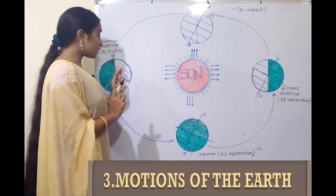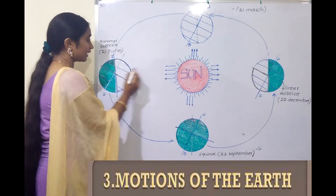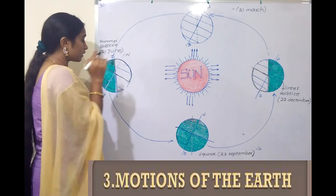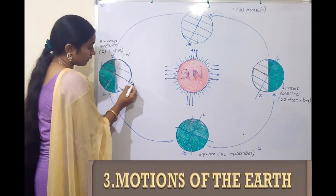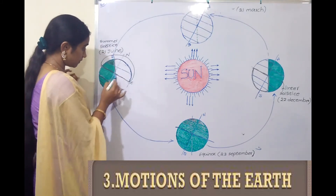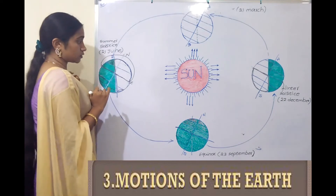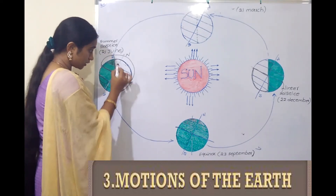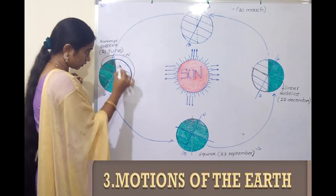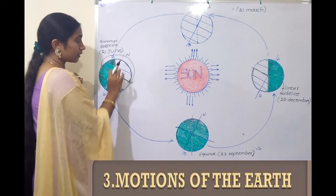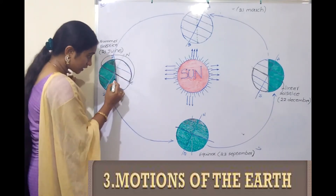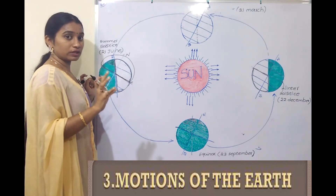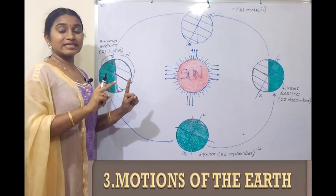We will see this in a diagrammatic representation. The sun and the northern hemisphere — so how does the northern hemisphere and the southern hemisphere have clarity? This is the equator. From here, this part is the northern hemisphere and this is the southern hemisphere. You can identify the orbital plane. The northern hemisphere has the longest days and shortest nights.